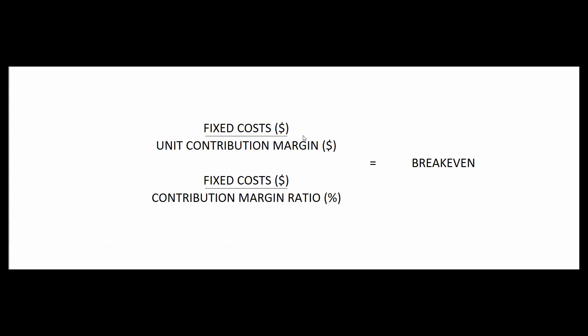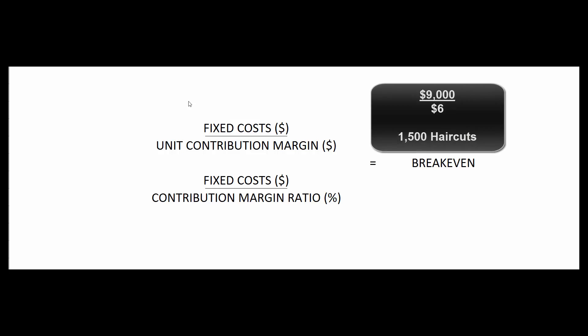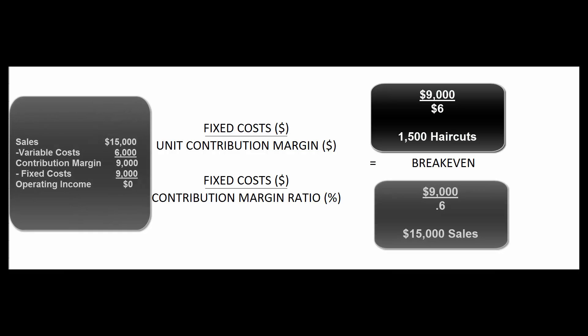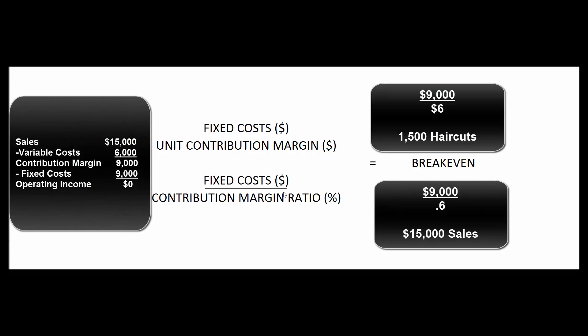To figure out our break-even in units, take our $9,000 in fixed costs and divide by our $6 unit contribution margin — we have to sell 1,500 haircuts. To get the same answer expressed in dollars, divide by the contribution margin ratio: $9,000 divided by 60% gives us $15,000.